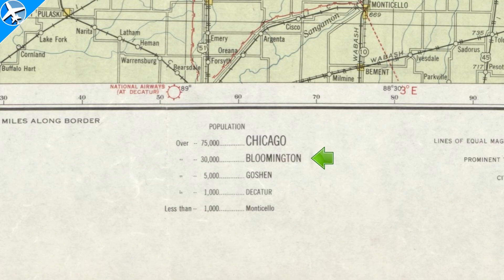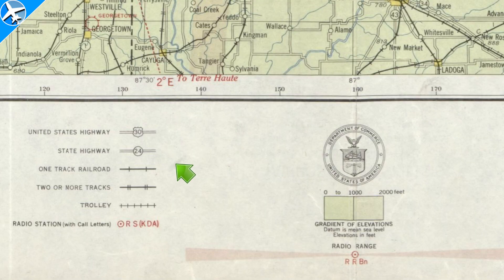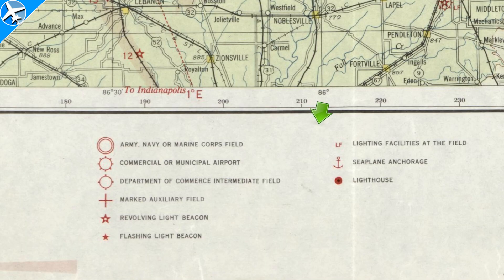Examples of a city or town's population based on the size of the city's outline were also shown. Visible landmarks such as US highways, state highways, single and double railroads, and even trolley lines were shown. Aeronautical chart creation was a duty of the Department of Commerce.